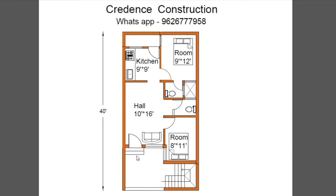We are going to see the main door. The size is 4 feet by 7 feet. The hall is 10 feet by 16 feet. This is a sofa set. The hall has 1 window and the size is 4 feet by 3 feet.